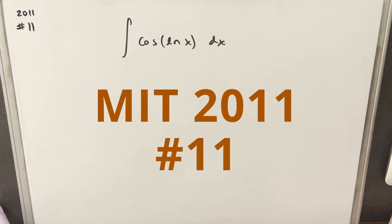Okay, so today I wasn't really sure what to do next, so I decided I would do another integral, and we'll do one from the MIT integration B2011. This was problem 11. We have the integral of cosine ln x dx.